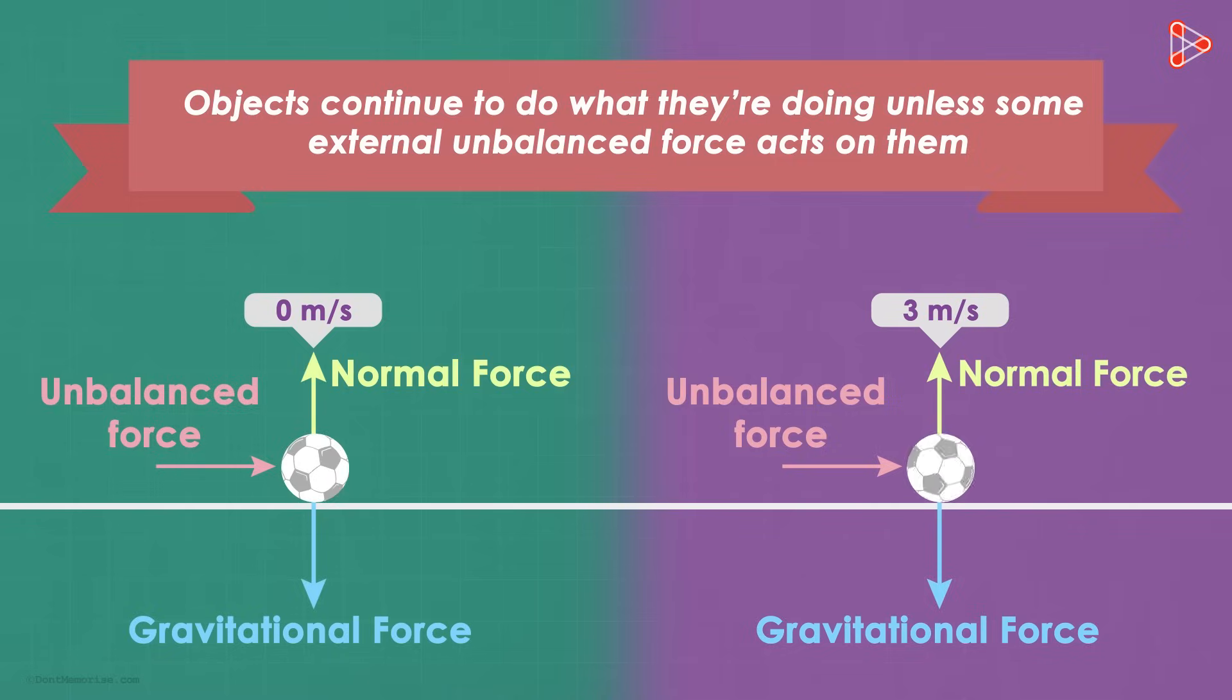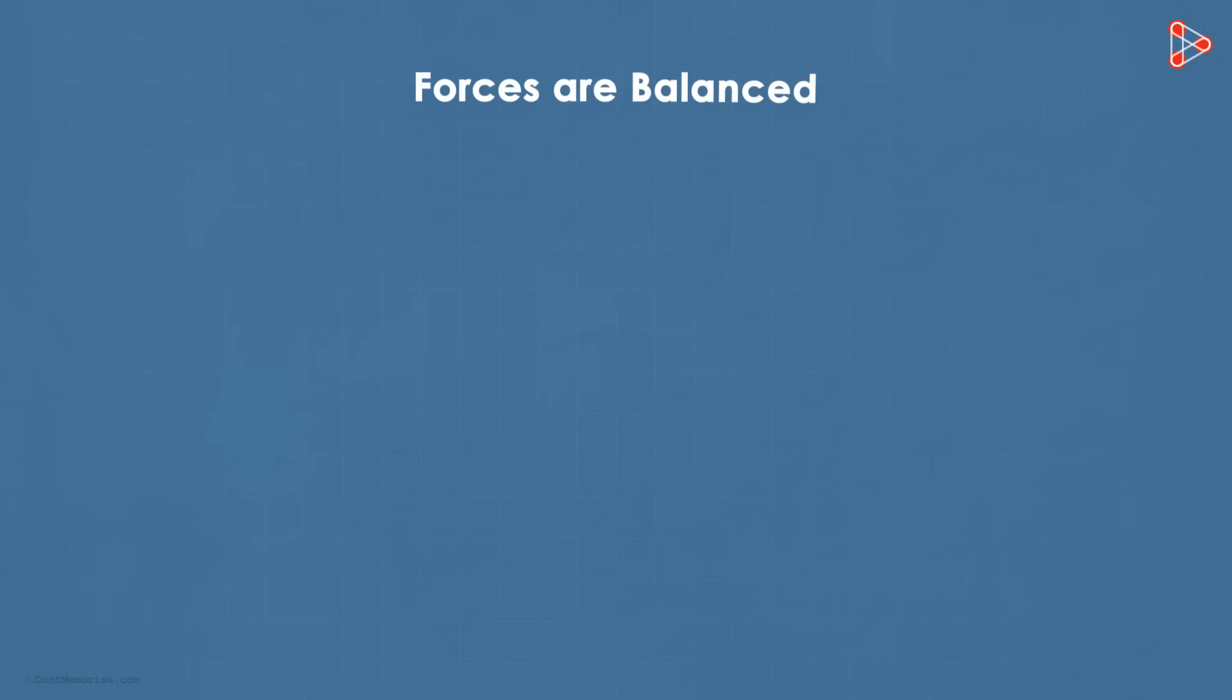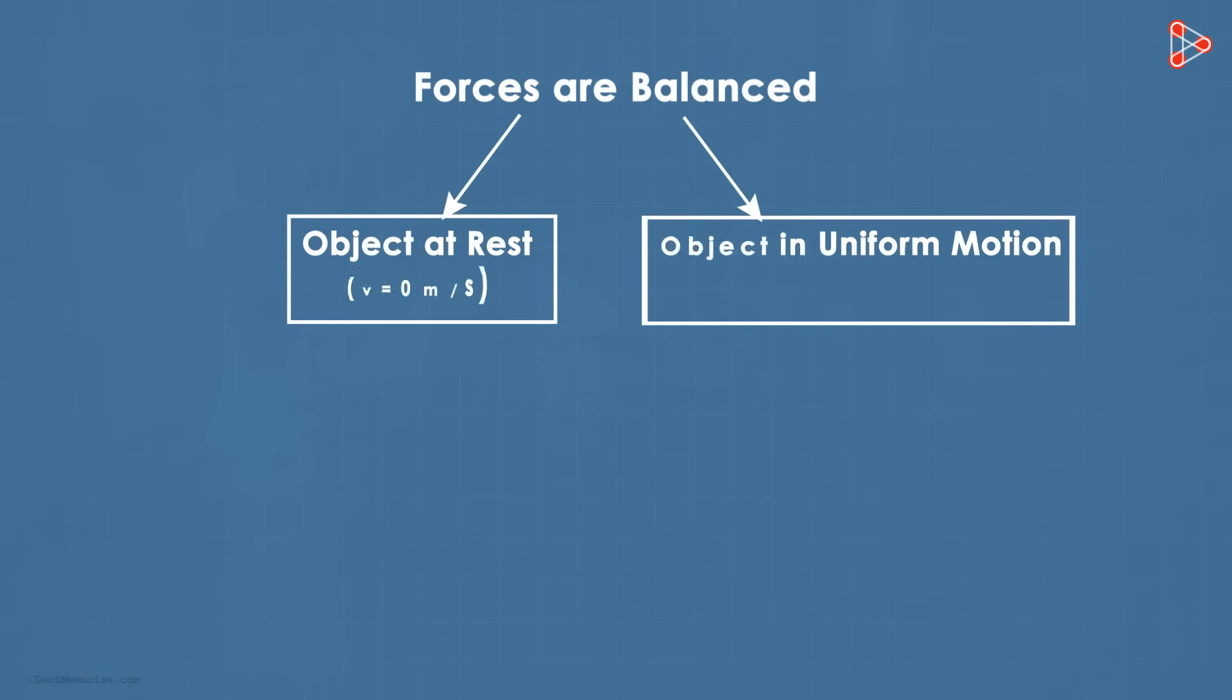We can also understand this using a simple diagram. If the forces are balanced, there can be two cases: an object may be at rest, or an object will be in motion at a non-zero constant velocity in a particular direction.